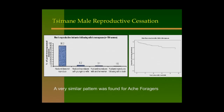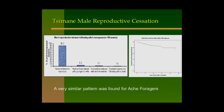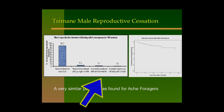While men can continue to reproduce into old age, most men don't. Most men have effective behavioral menopause—when their wife goes through menopause, they don't have any more kids. For the Tsimane, 90% of men did not reproduce again after their wife went through menopause; those who did were polygynously married. We found a very similar pattern for Aceh foragers, where about 80-some percent didn't reproduce again after their wife went through menopause.